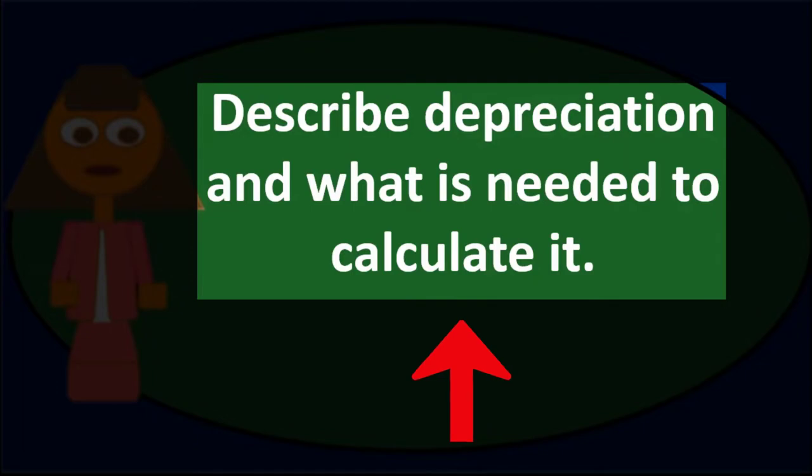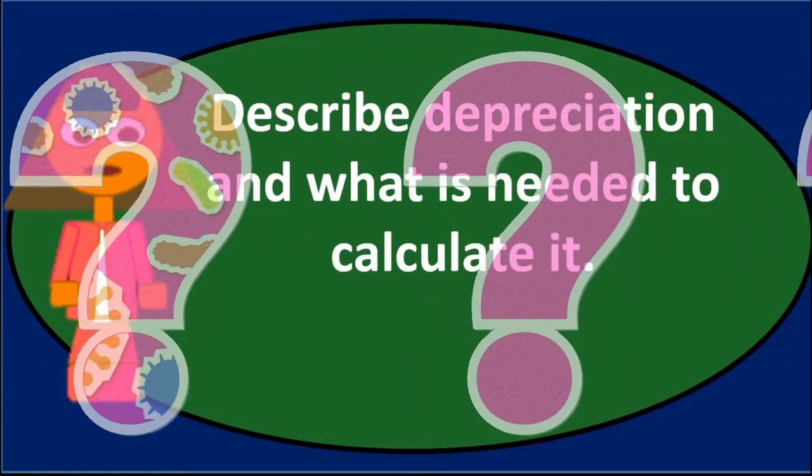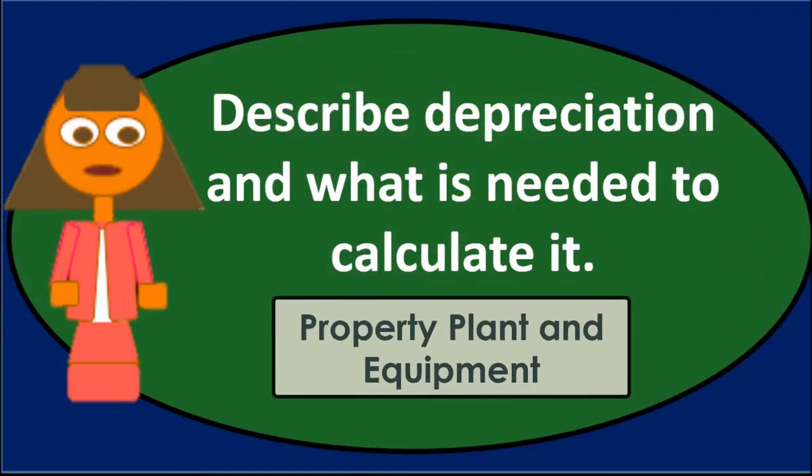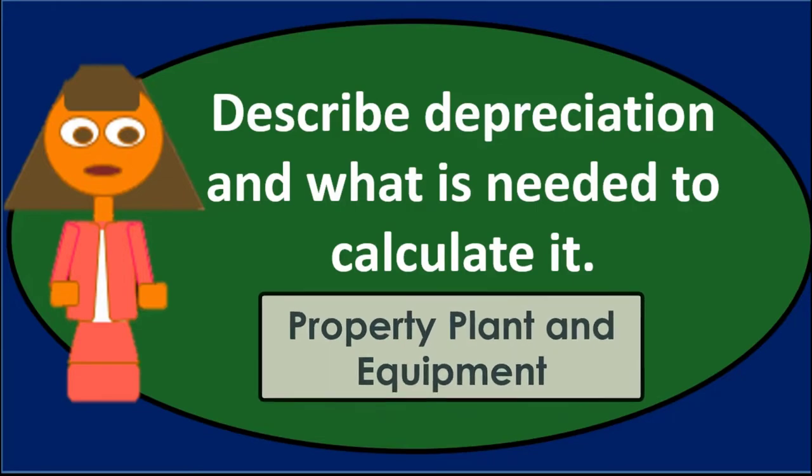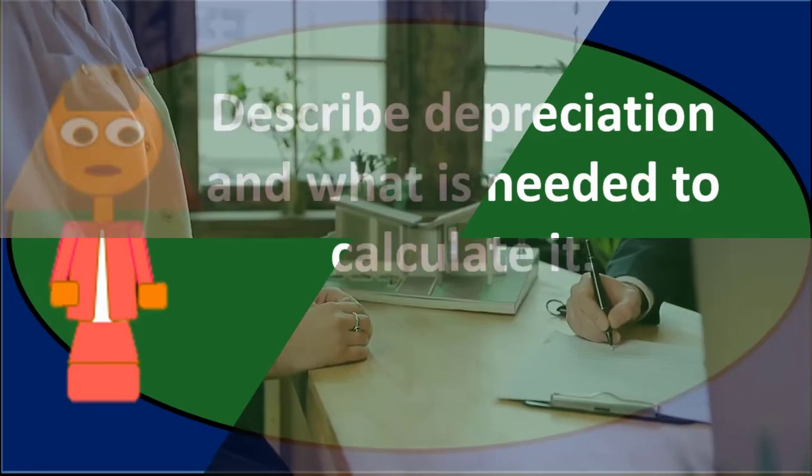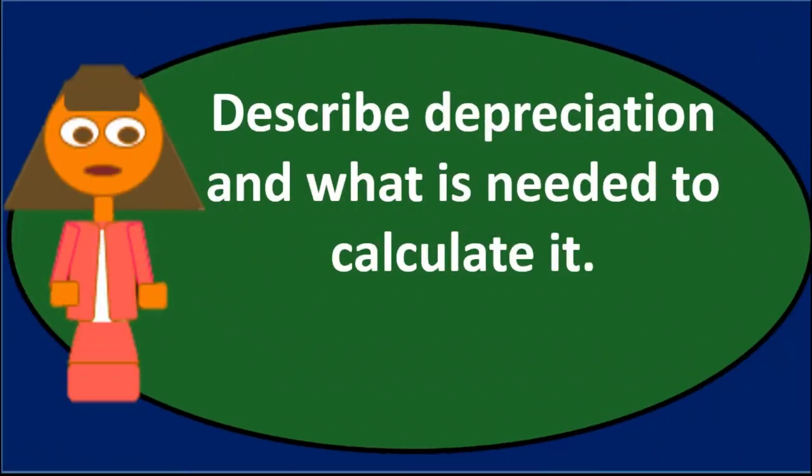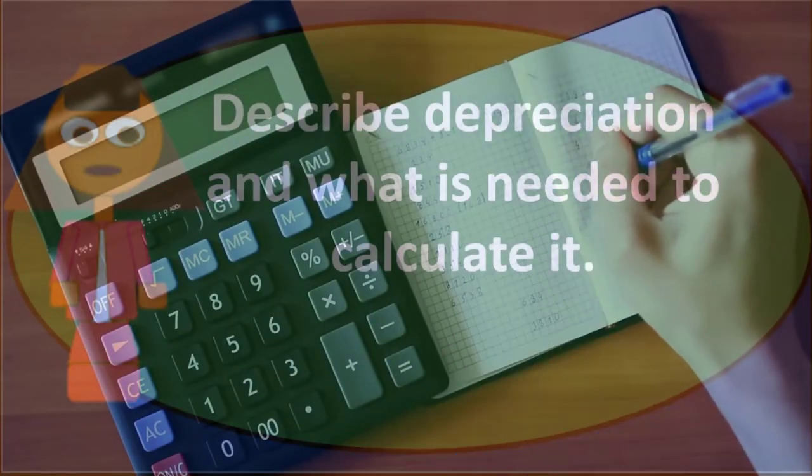If we see an essay question like this we may want to have a quick start in terms of what is property, plant, and equipment so that we can then talk about the depreciation related to it. Property, plant, and equipment is going to be a fixed asset, typically a tangible asset. It's typically something that's going to have a useful life more than a year, and therefore we put it on the books as an asset rather than expensing it at the point of purchase.